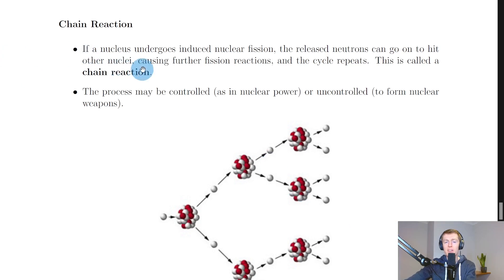It says here that if a nucleus undergoes induced nuclear fission, the released neutrons can go on to hit other nuclei, causing further fission reactions, and the cycle repeats. This is called a chain reaction.